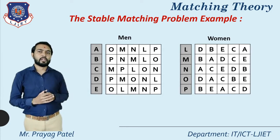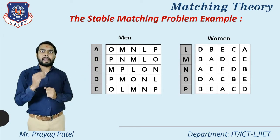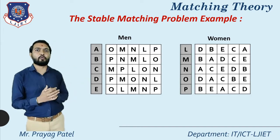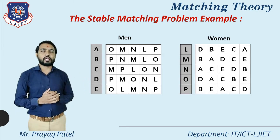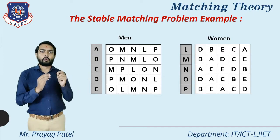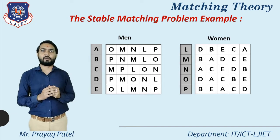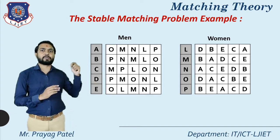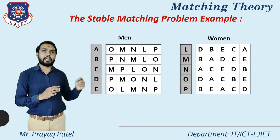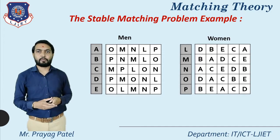We understand this using an example. The first table is the man table with men A, B, C, D, E. The second table is the woman table with women L, M, N, O, P. We must match men with women. Man A's priority is O, M, N, L, P. For woman L, her priority for men is D, B, E, C, A. We arrange assignments according to the stable marriage problem.